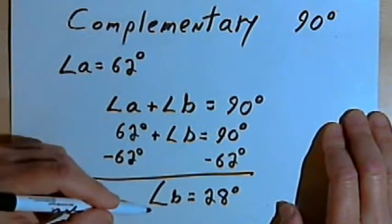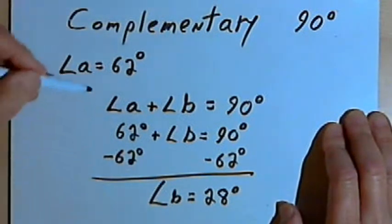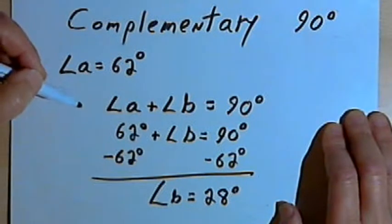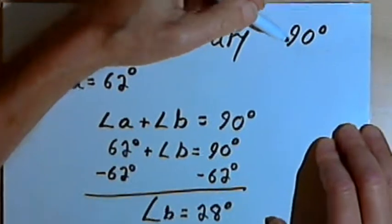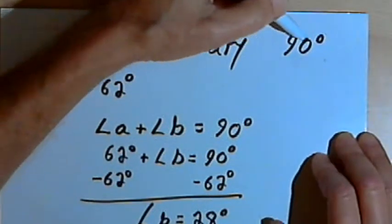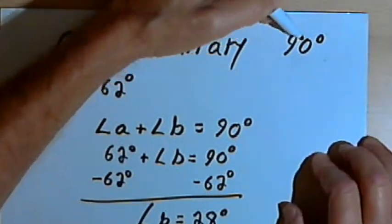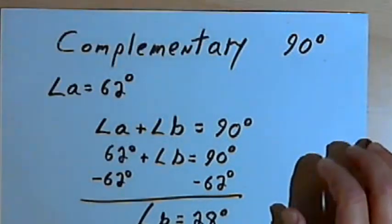So basically, complementary angles added together are going to have a measure of 90 degrees.